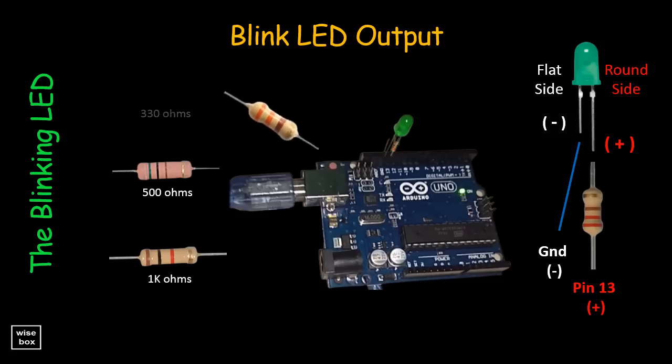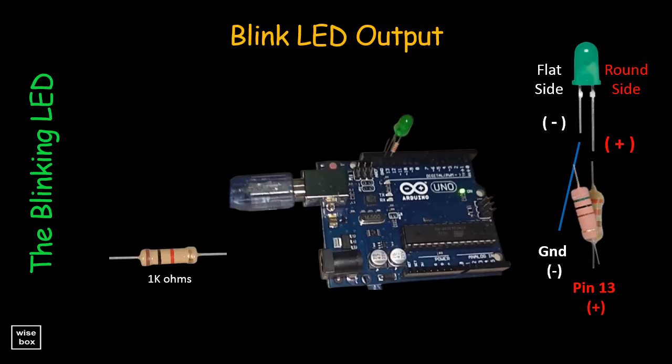Here's how the LED lights up with 330 ohm resistor. When we use a 500 ohm resistor, the LED light is a lot dimmer. While for a 1 kilo ohm resistor, the LED light is very faint.